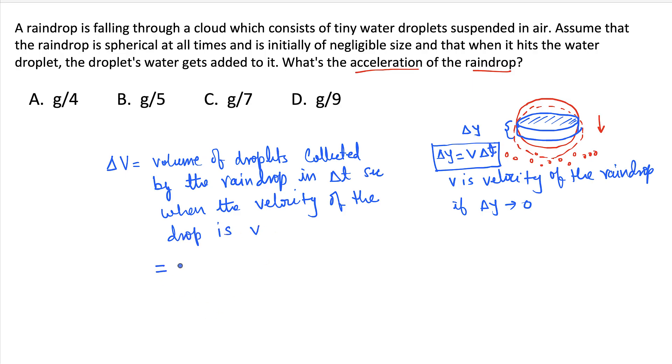So what is the cross section area? If we assume that the radius at that time is R, so cross section area is nothing but pi R square, and the delta Y is the distance that it covers. So delta Y. So this much volume of the droplets is collected, and that's the volume of this disk, pi R square into delta Y. So we can write pi R square V delta T, and since delta T is so small, we can take velocity as constant for that delta T.